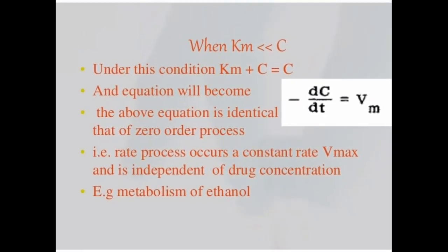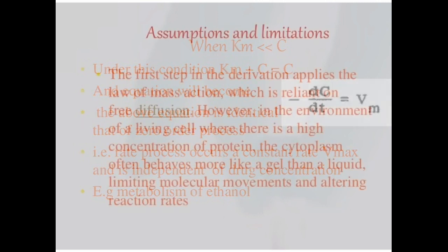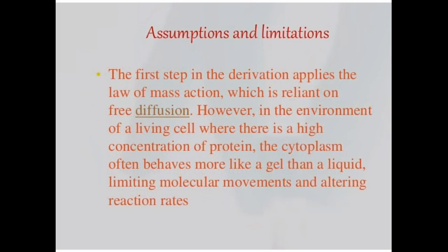In next scenario where Km is less than C, under these conditions Km plus C will become the concentration. The above equation is identical to zero order process, that is rate process occurs at constant rate and Vmax is independent of drug concentration, example metabolism of ethanol. Then we will see assumptions and limitations of non-linear pharmacokinetics.